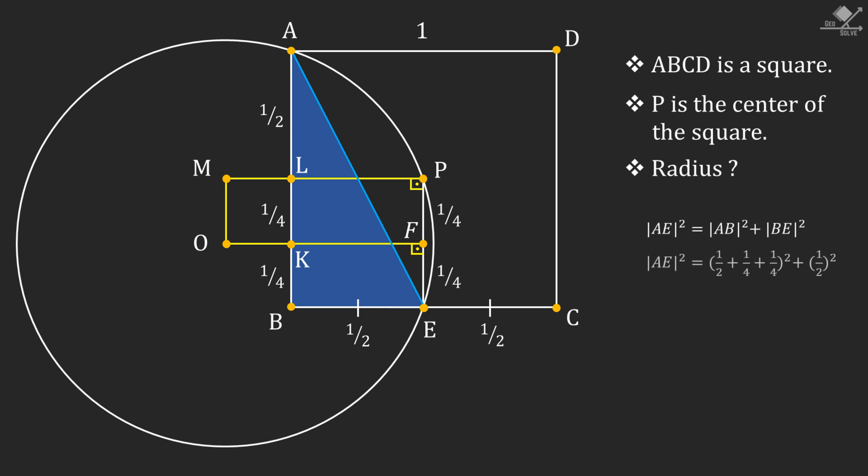Let's put the values into the equation. From here, the length of line segment AE can be calculated as square root of 5 over 2 units.